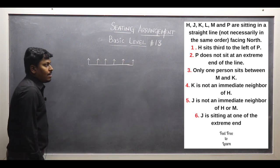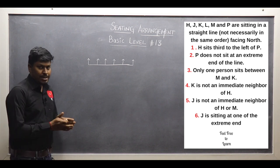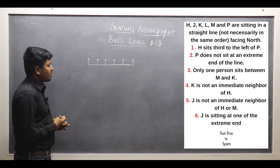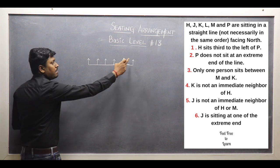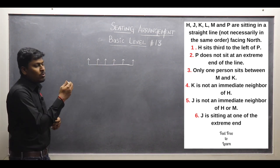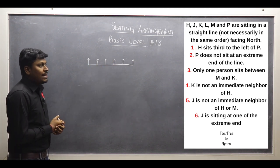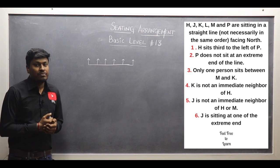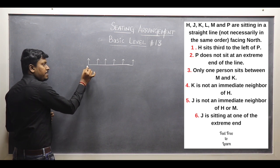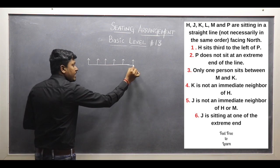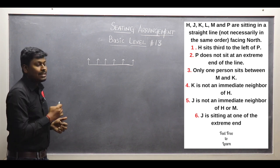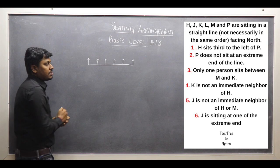Point number 1: H sits third to the left of P. So P's left-hand side at the third place is H. Now we have many possible positions — P can be placed here, here, or here — giving us 3 possible cases. Moving to the next point: P does not sit at an extreme end of the line. So P cannot be fixed at either extreme end. According to point 1, P's left-hand side at the third place is H, so we have two possible cases remaining.